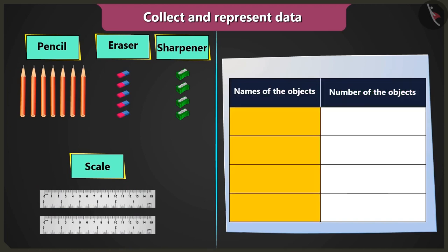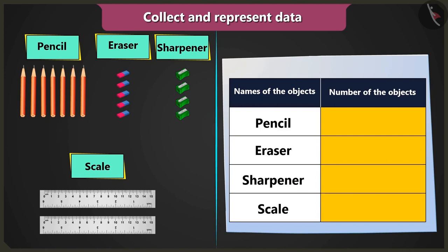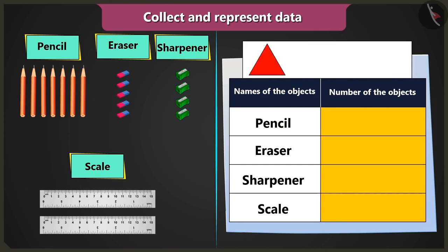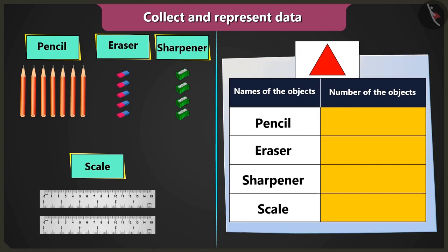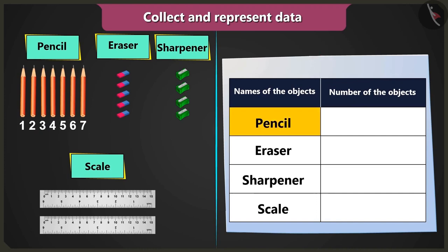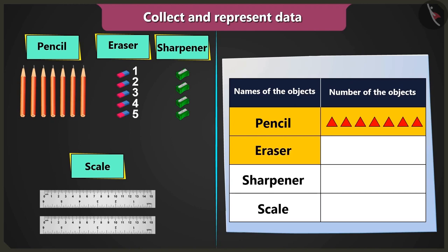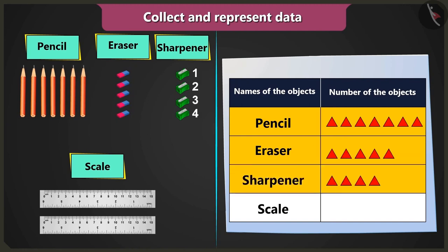Now write which objects are in the column names of the objects: pencil, eraser, sharpener and scale. Now in the column count of objects, you have to draw as many triangles as the number of objects. So we will draw seven triangles for pencils, five triangles for erasers, four triangles for sharpeners, and two triangles for scales.